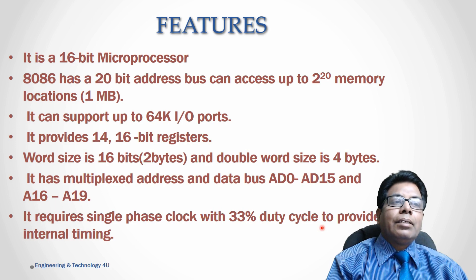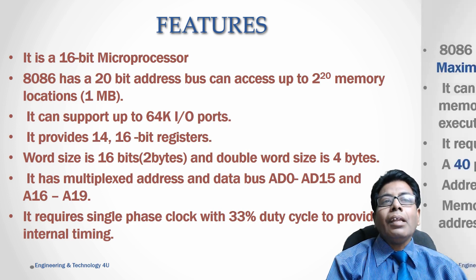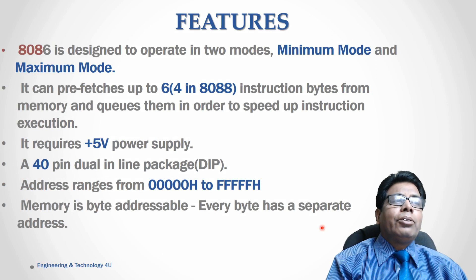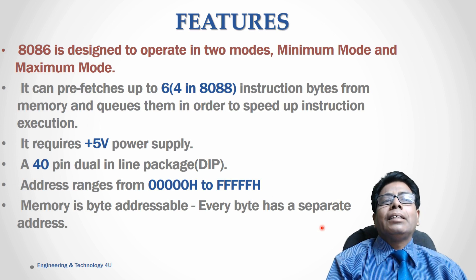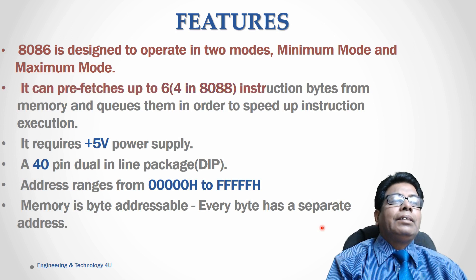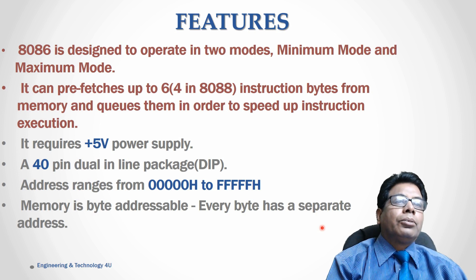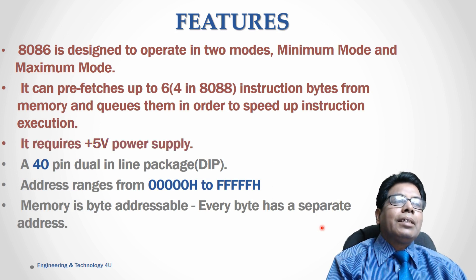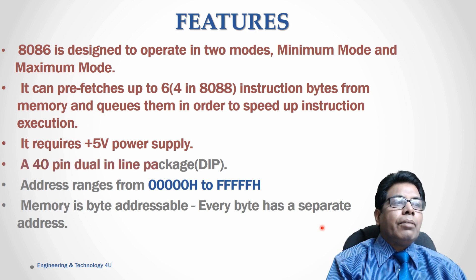It requires a single clock with 33% duty cycle to provide internal timing. The 8086 is designed to operate in two modes: minimum mode, which is a single processor mode, and maximum mode, which is a multiprocessor mode — we'll study this in detail later. It can prefetch up to six instruction bytes from memory and queue them to speed up instruction execution; this part is called pipelining. It requires a +5 volt power supply.